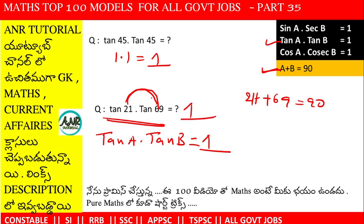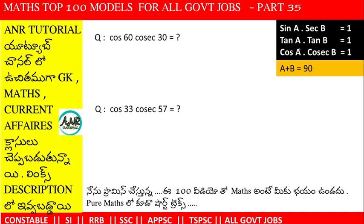When both values add up to 90 degrees, the answer is 1. This is a very important rule. If the two values together equal 90 degrees, that formula applies and the answer is 1 directly. The third and final formula is: cos a into cosec b is equal to 1. For example, cos 60 plus 30 is equal to 90, so this satisfies the third formula.